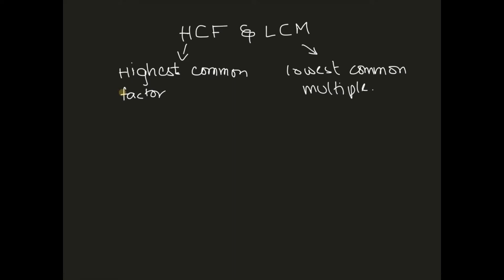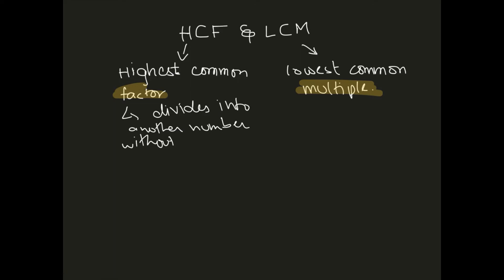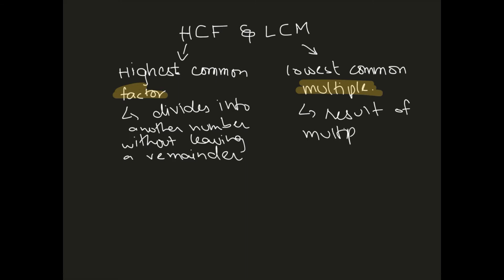First of all we need to know what exactly a factor and a multiple is. A factor is any number that divides into another number without leaving a remainder. A multiple is a number that is the result of multiplying a specific number with another integer.